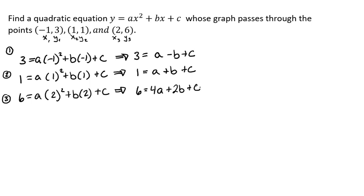Our third equation is six equals four a plus two b plus c. Now we want to use these three equations to solve a system of linear equations with three variables. We have to decide what we want to eliminate — a, b, or c. The c's look pretty easy because they're all just one c, so we're going to eliminate c first using equation one and equation two.